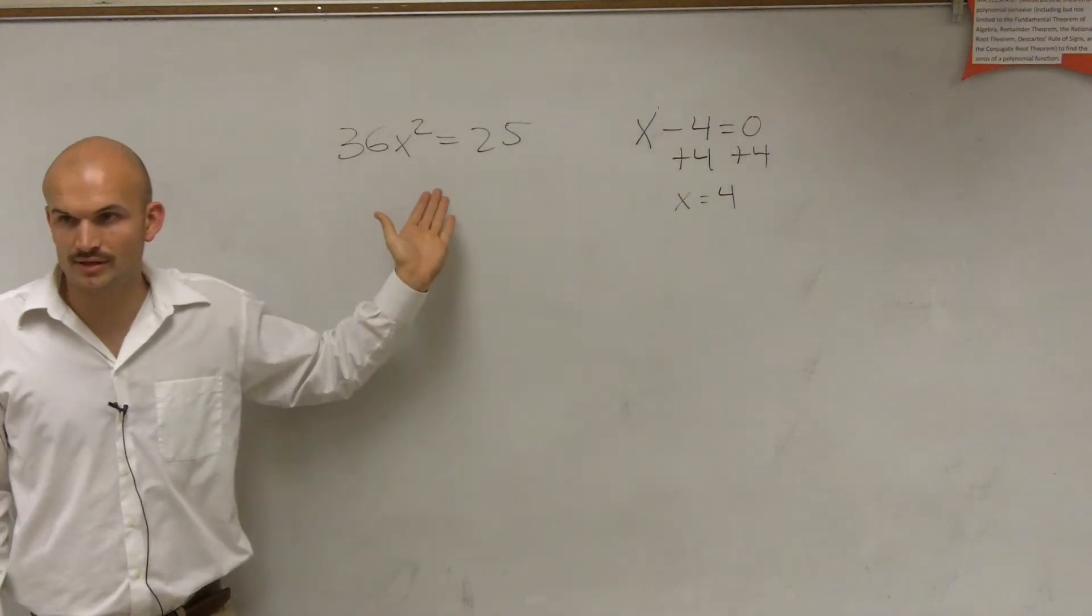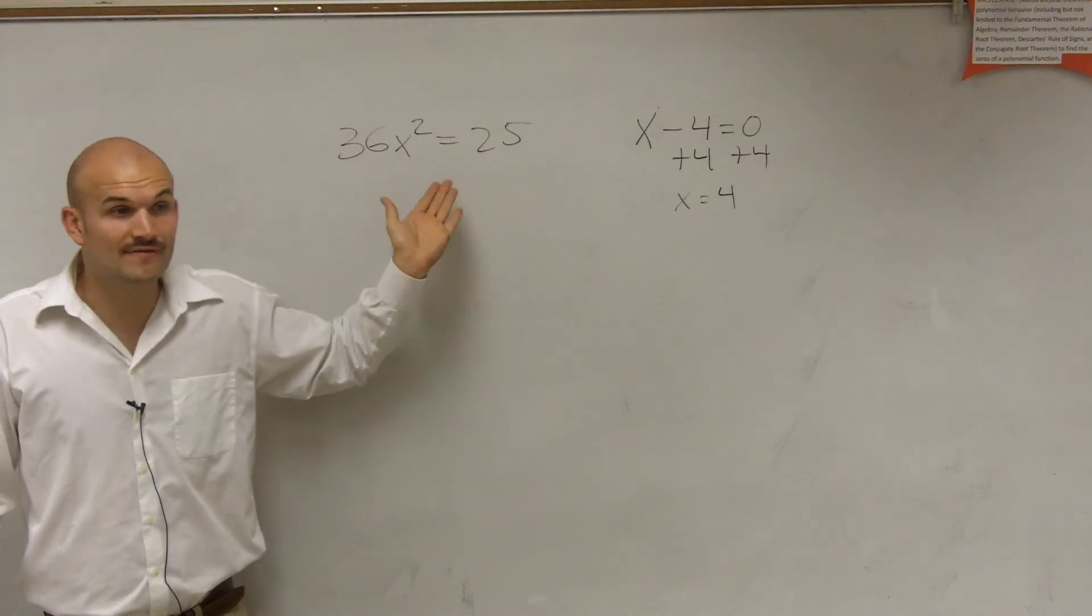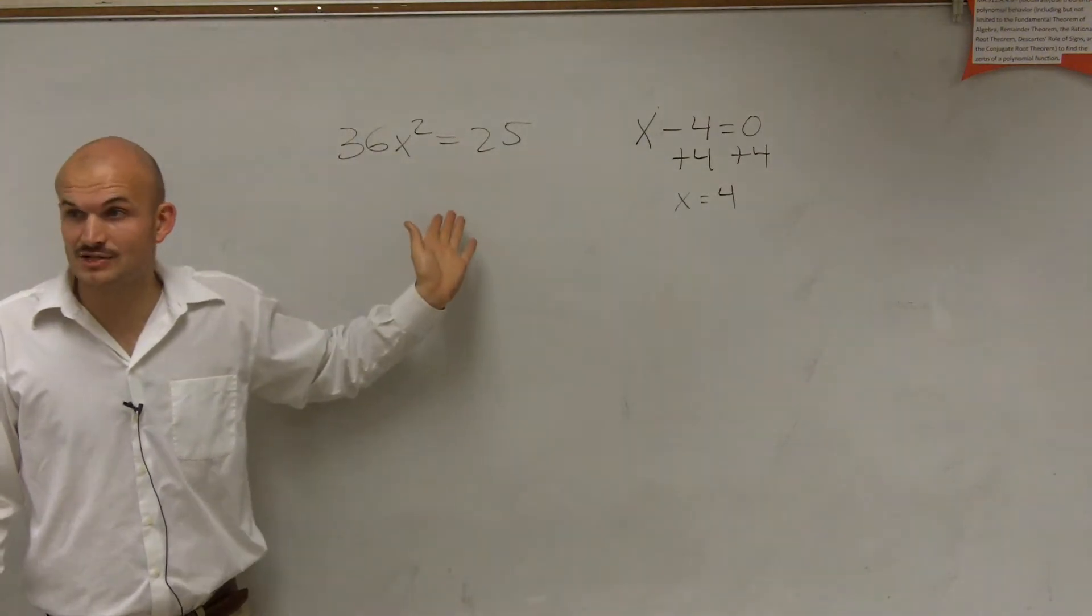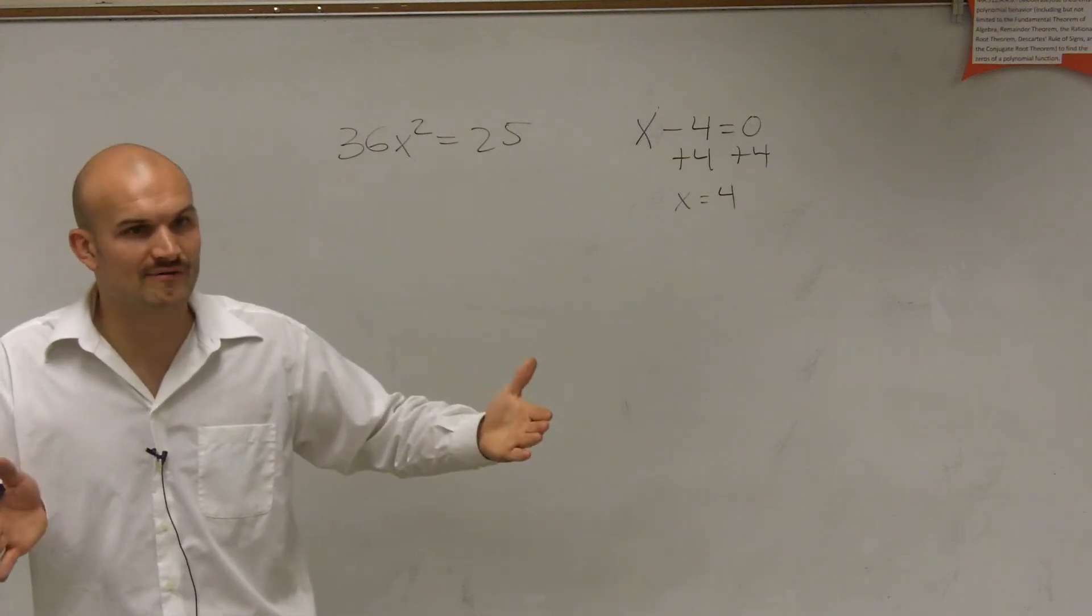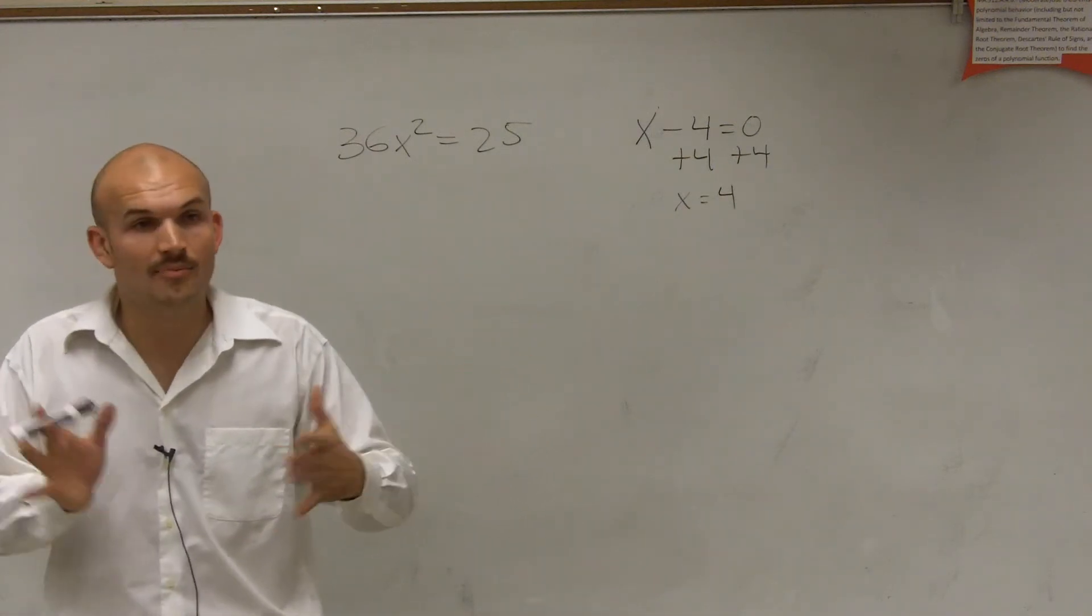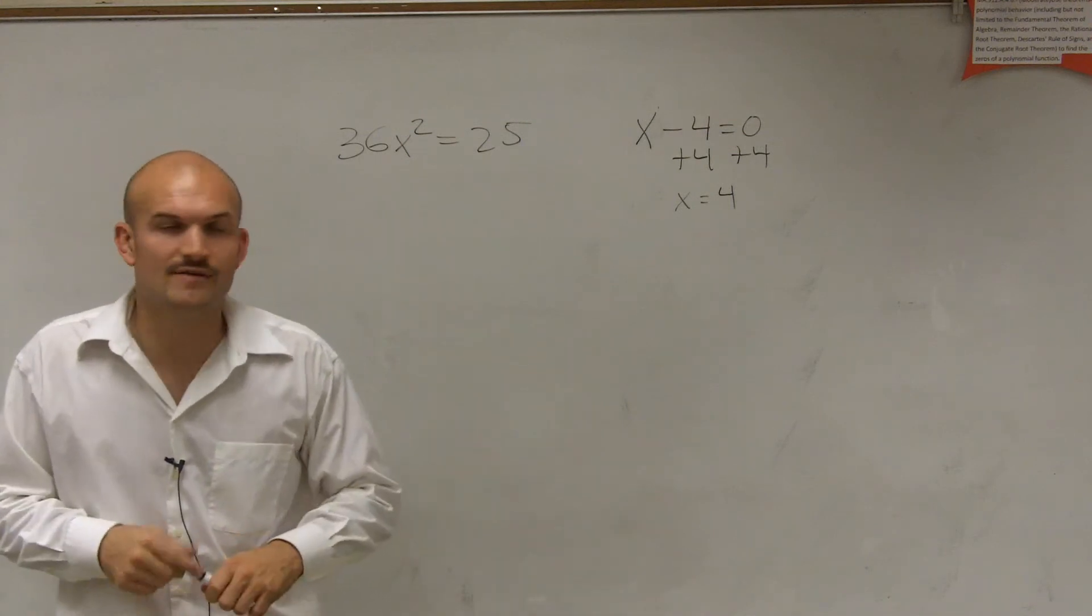Now, do I only have one variable here? Yeah. I only have the X. I only have one form of this X, and it's X squared. So what I can do is I can use my inverse operations. I don't need to go by factoring. You can factor it. But you can also use your inverse operations.